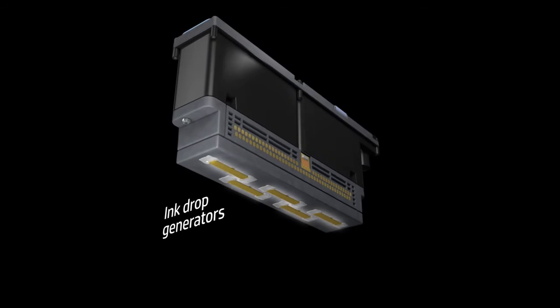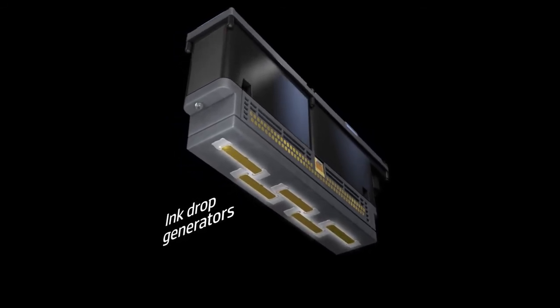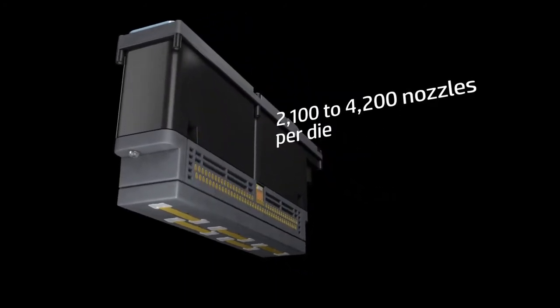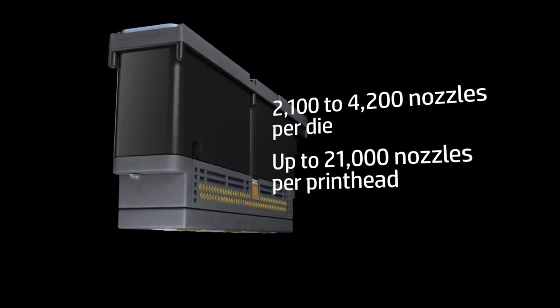The ink drop generators are on five staggered silicon chips called die placed along the bottom. Each die is about an inch long and can have 2,100 and even 4,200 nozzles. So some versions of this printhead have 21,000 nozzles.